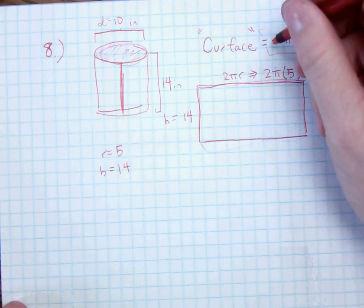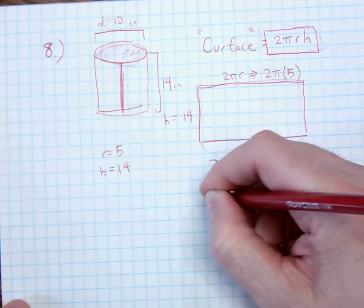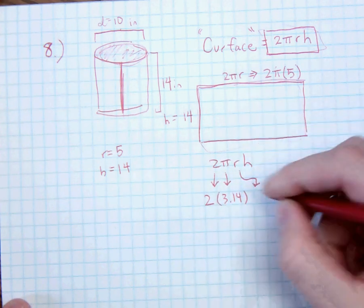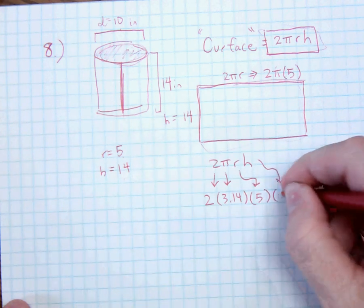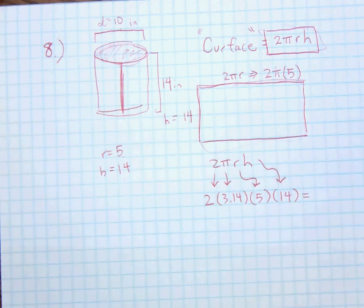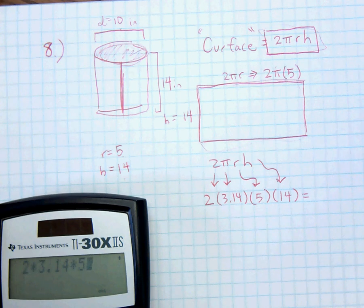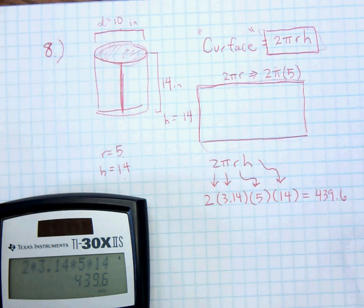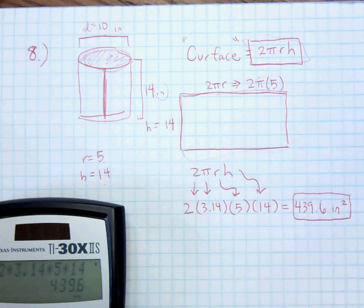Really if we just understand the formula, we can say 2 is obviously 2, π that's 3.14, r that was 5, and h that was 14. We throw all those through our calculating machinamajigger. 2 times 3.14 times 5 times 14 gives us 439.6. The only thing we need is the fact that it is inches. And since we found surface area, it is inches squared. So that's number 8.